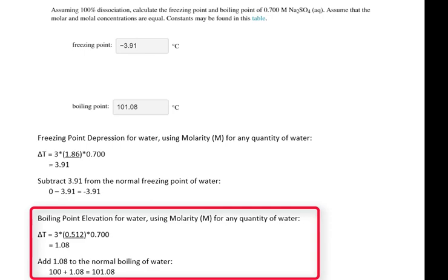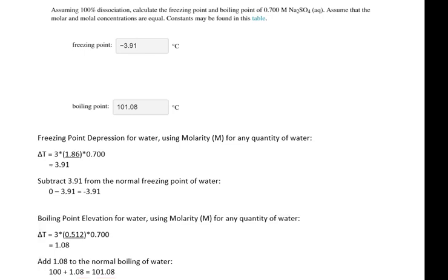The delta T for the boiling point is 3 times 0.512 times 0.7, which is 1.08. Then we add the 1.08 to 100 to get our new boiling point of 101.08.